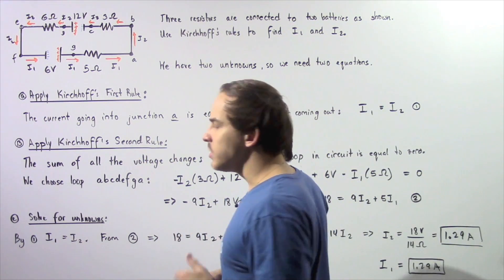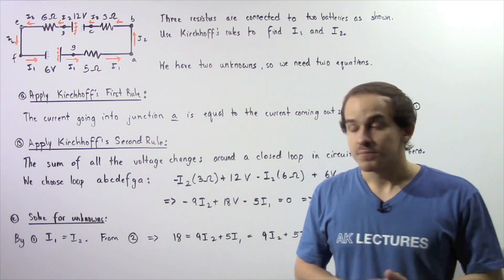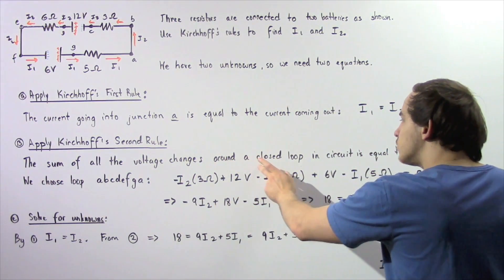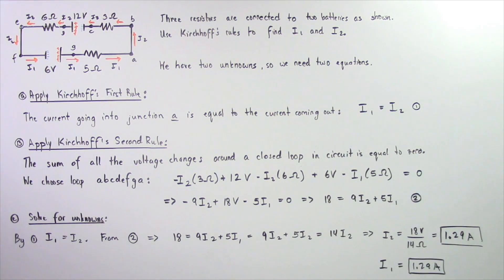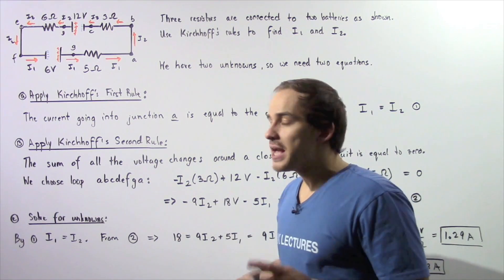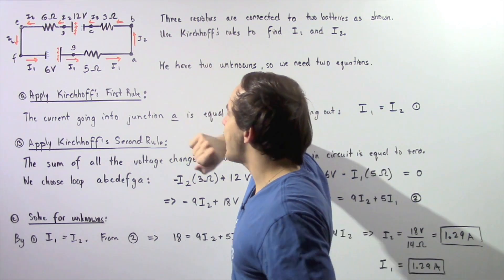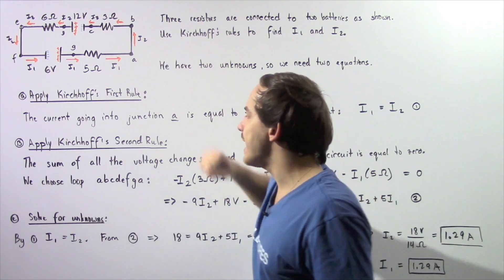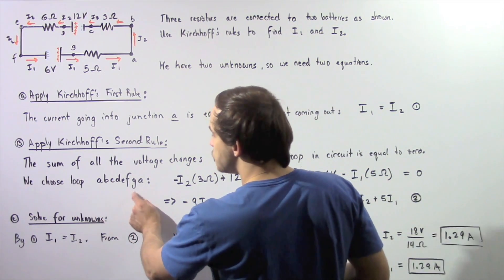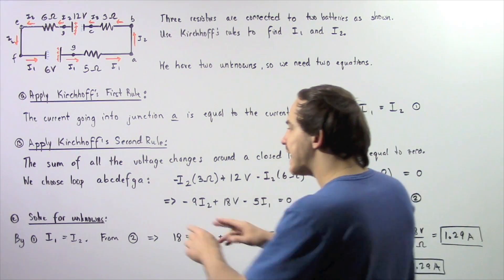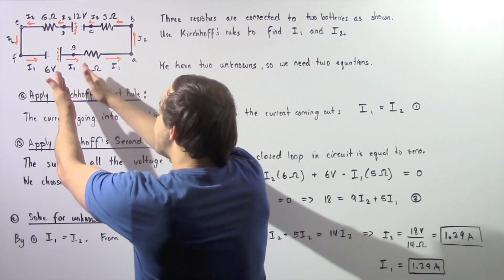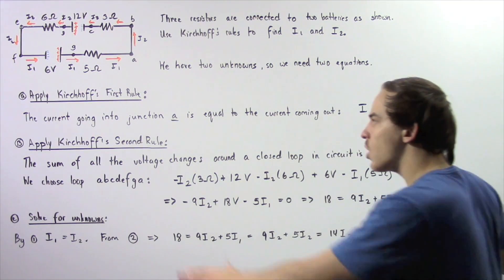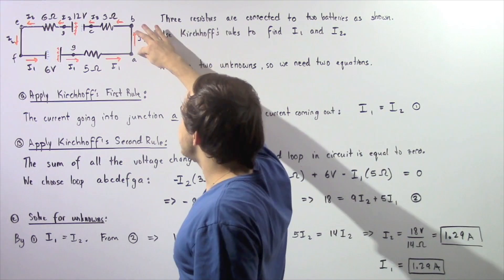Now let's apply Kirchhoff's second rule, also known as the loop rule. This rule tells us that the sum of all voltage changes around a closed loop in a circuit is equal to zero. We choose the closed loop starting at point A, going to B, then C, D, E, F, G, and back to A — let's call this loop ABCDEFGA. We want to find all the voltage changes our electric current experiences, and that sum equals zero.